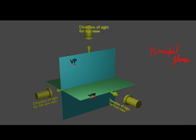In this figure you can also see the direction of sight for the top view — when we want a top view we look from that side. When we want the front view, that is the direction of sight. When we want the left side view we consider that side, and if we want the right side view then we consider that side as the direction of sight.